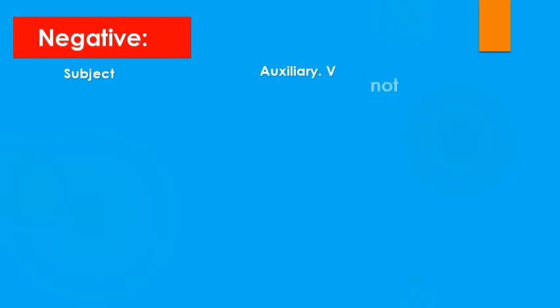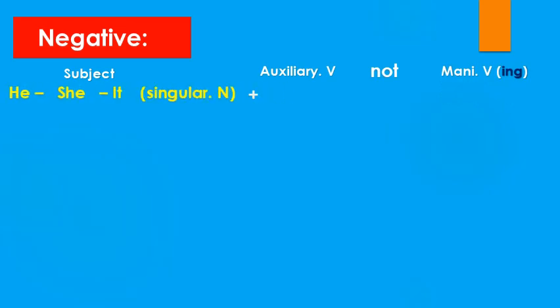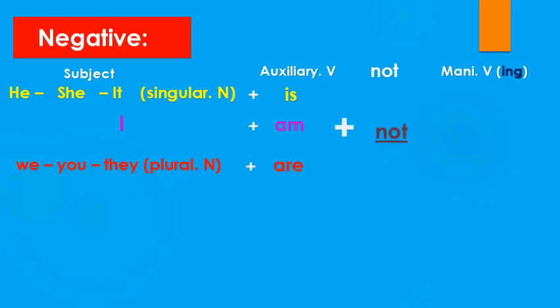Okay guys, now let's move to the negative form — al-manfi. We have: subject, auxiliary verb, plus 'not', then the main verb with -ing. If the subject is he, she, it, or any singular noun, the auxiliary is 'is not'. If the subject is 'I', it's 'am not'. If the subject is we, you, they, or any plural noun, the auxiliary is 'are not'.